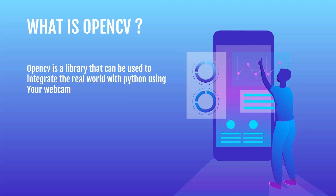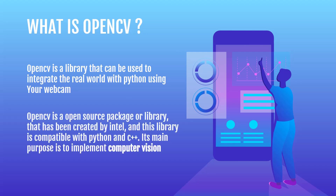Here's the somewhat technical definition of OpenCV. OpenCV is an open source package or library that has been created by Intel, and this library is compatible with both Python and C++. Its main purpose is to implement computer vision. Intel mainly focused on creating this package to be used with two popular programming languages — Python and C++ — and its main purpose is to implement computer vision.